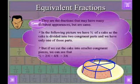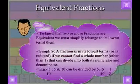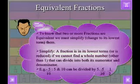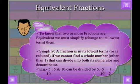To know that two or more fractions are equivalent, we must simplify or change to its lowest term. A fraction is in its lowest term or is reduced if we cannot find a whole number other than one